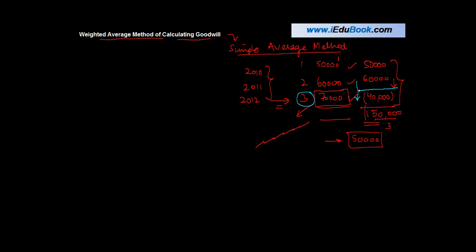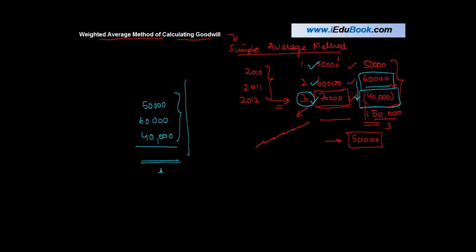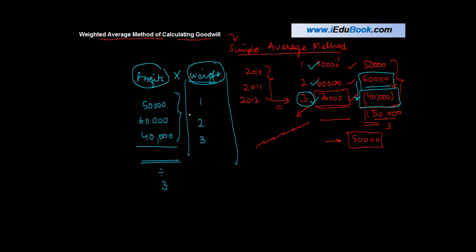In order to give more importance to recently earned profits, we assign a different weight to each profit figure. So for profits of 50,000, 60,000, and 40,000, instead of taking a simple average, we assign a weight of 1 to the earliest year, 2 to the middle year, and 3 to the latest year. Then we multiply the profits by their respective weights, getting 50,000, 1,20,000, and 1,20,000.